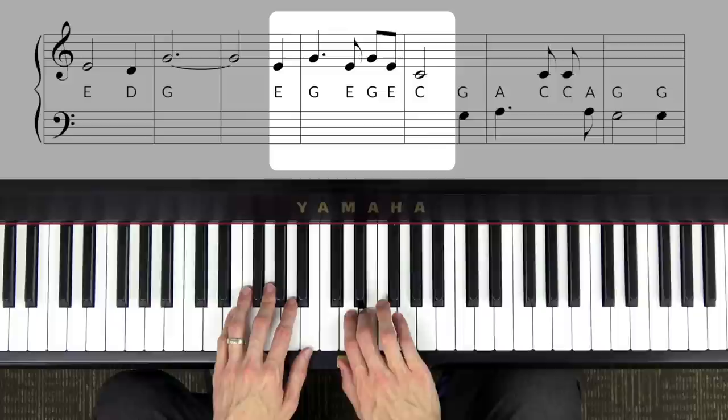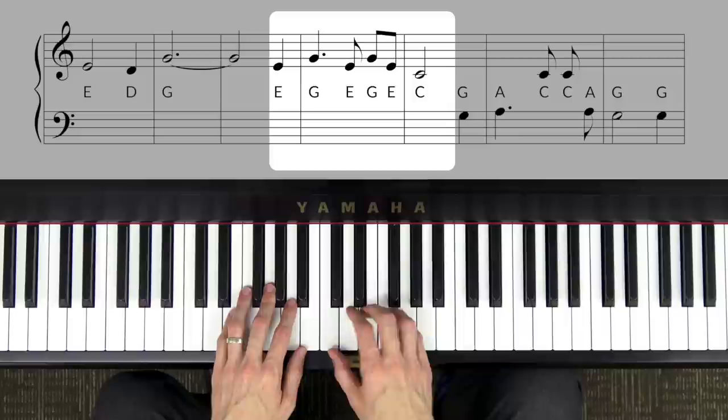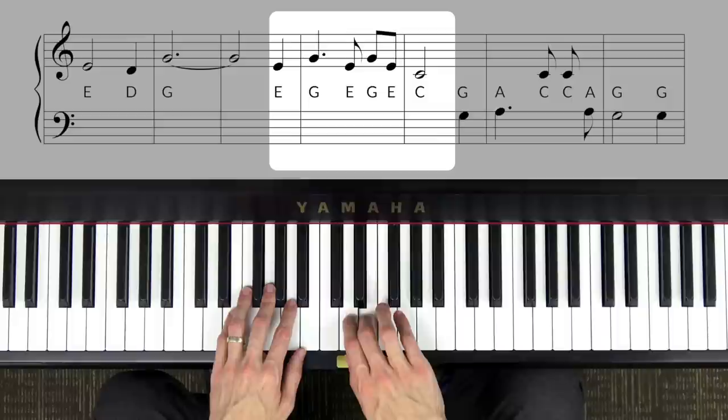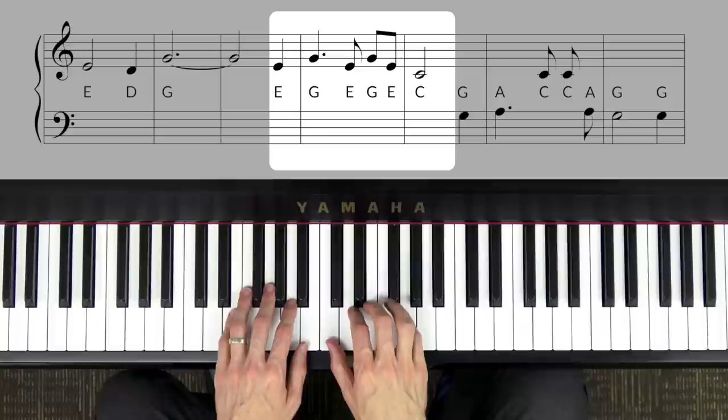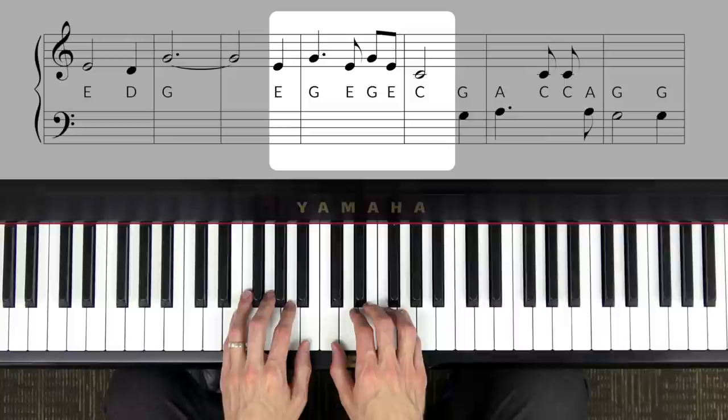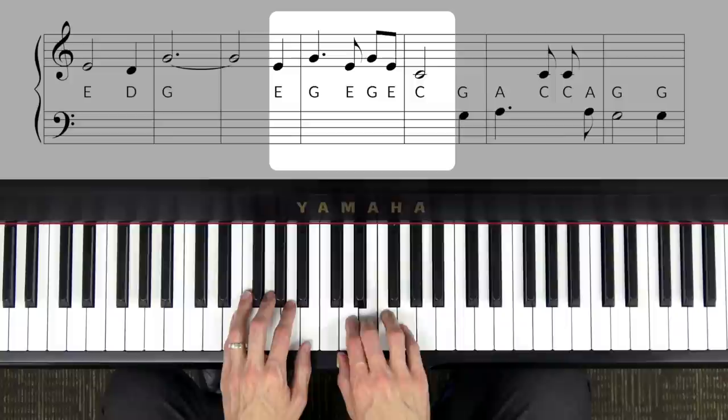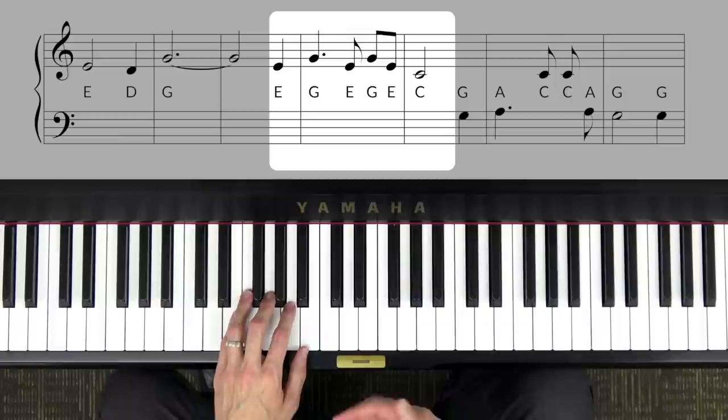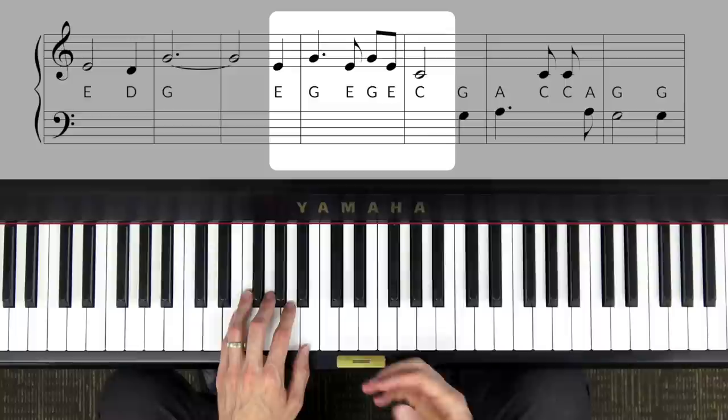I once was lost. So here we're just going back and forth between E and G. E G E G E C For I once was lost. Just fingers 3 and 5 and 1. Now you try. Good. Now let's try it one more time. I once was lost. Now you try. You might find it helpful to actually sing along as you play. That will help you remember the correct rhythm and the correct sound of the notes.